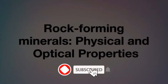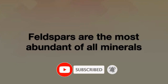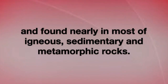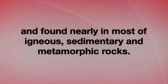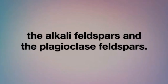Rock-forming minerals: physical and optical properties. Feldspars are the most abundant of all minerals and are found in nearly most of the igneous, sedimentary, and metamorphic rocks. Feldspars are divided into two compositional series: the alkali feldspars and the plagioclase feldspars.